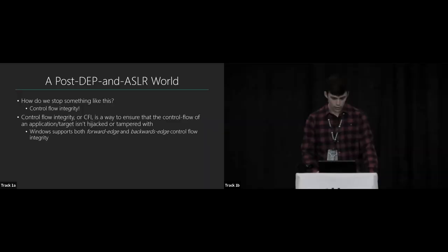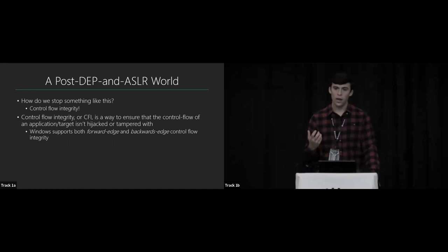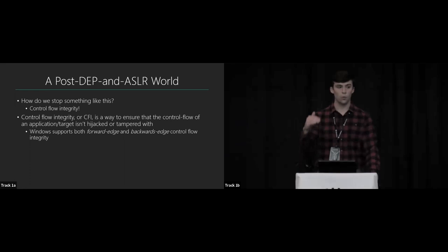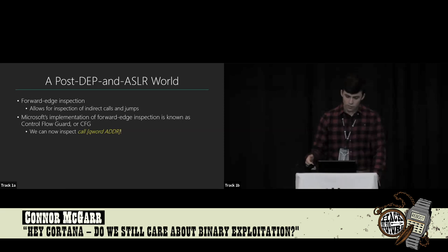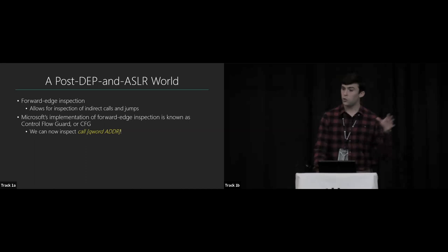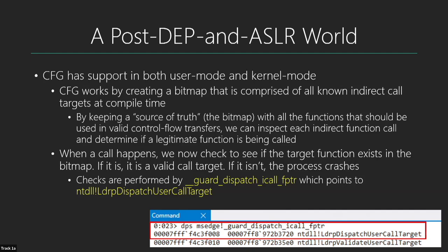How do we stop this? The answer is Control Flow Integrity, or CFI — a way to ensure that an application's control flow isn't tampered with. Windows supports both forwards-edge CFI, which checks calls and jumps, and backwards-edge CFI, which checks returns. Microsoft's implementation of forwards-edge CFI is Control Flow Guard, or CFG, shipped as an optional update in Windows 8.1. At compile time, a bitmap is created containing all known functions used in valid control flow transfers.